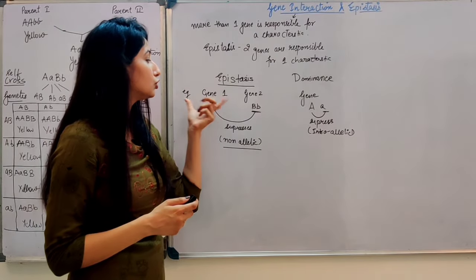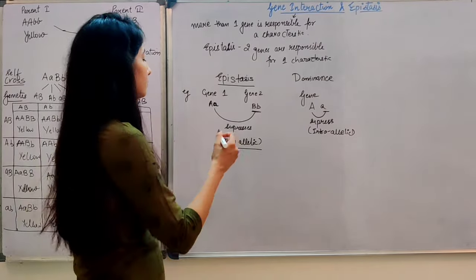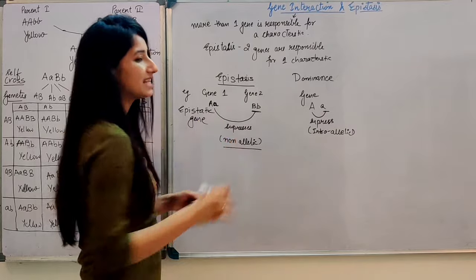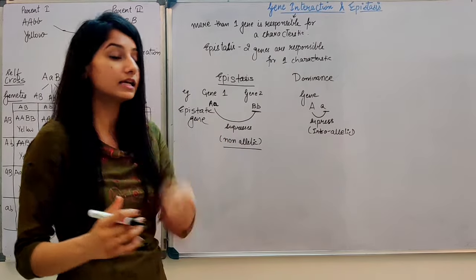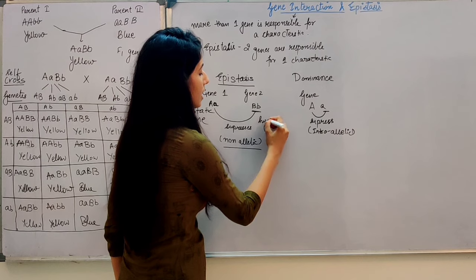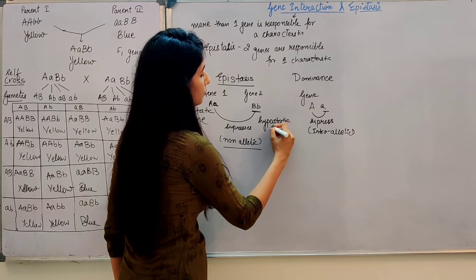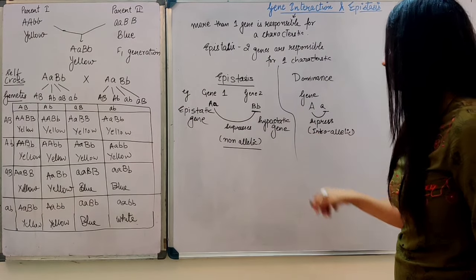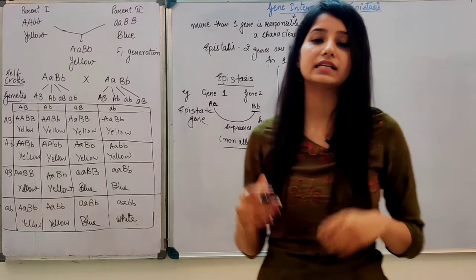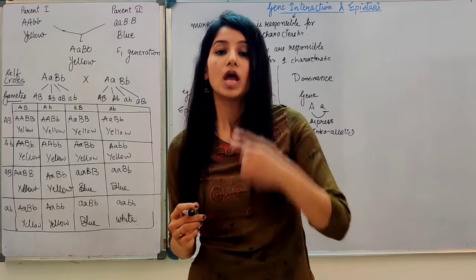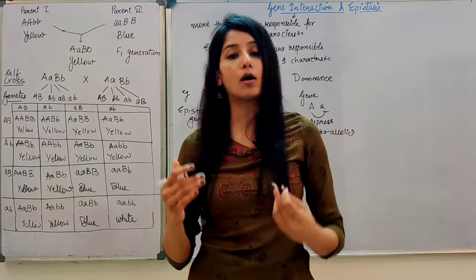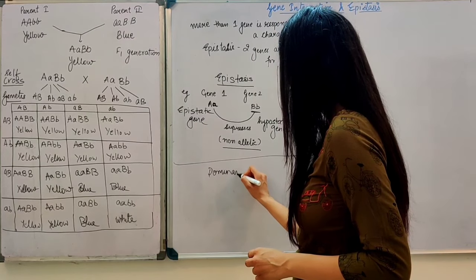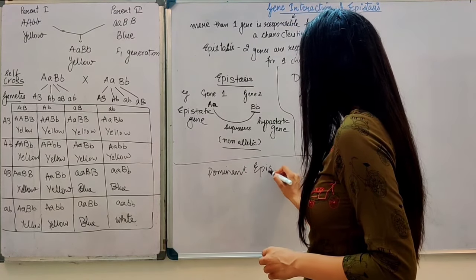The gene which is suppressed is called the hypostatic gene. Now if we look at types of epistasis — epistasis has many types. The first type is dominant epistasis.